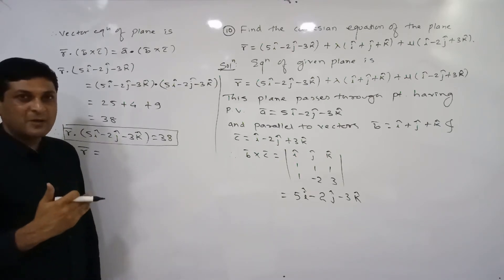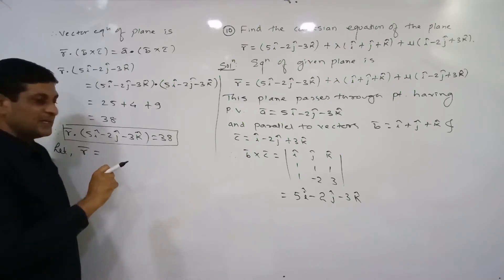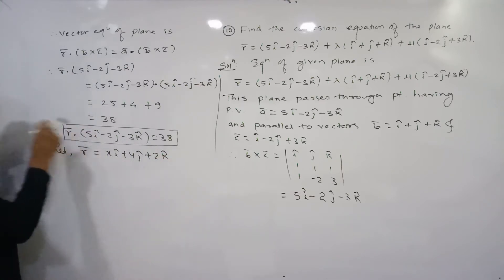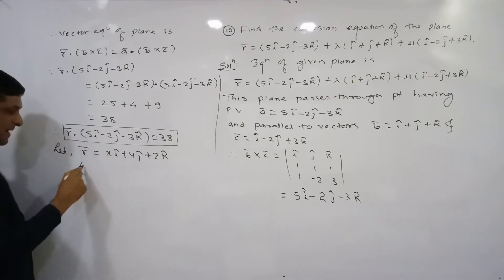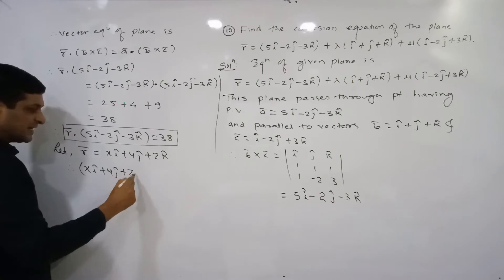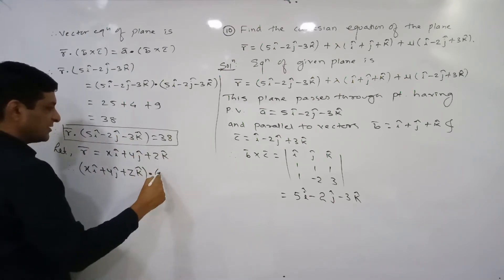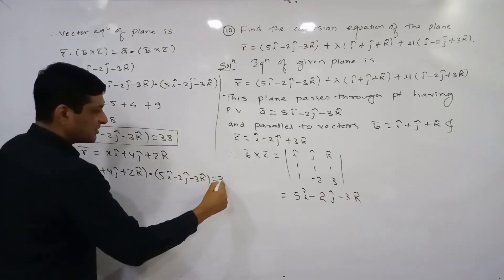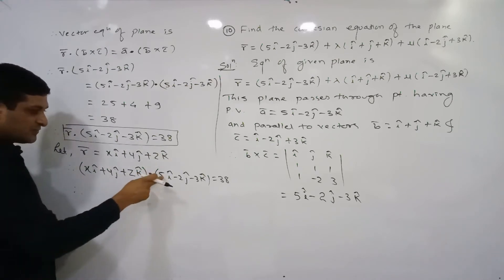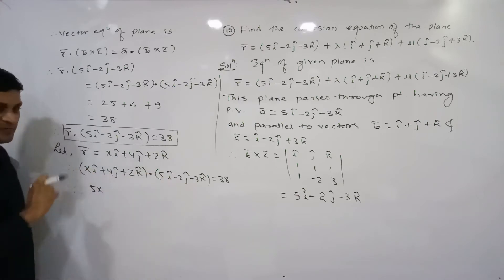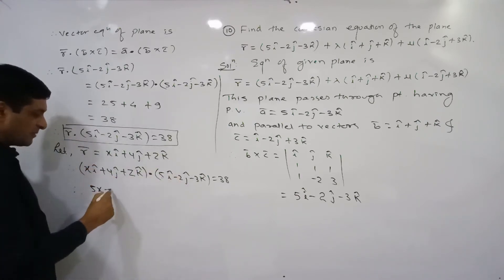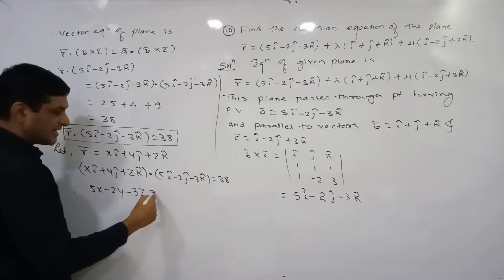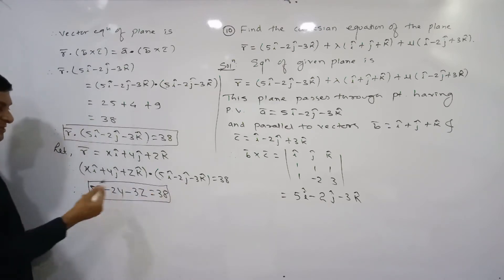To convert to Cartesian form, substitute r̄ = xî + yĵ + zk̂, since r̄ is the position vector of any point (x, y, z) on the plane. Substituting: (xî + yĵ + zk̂) · (5î - 2ĵ - 3k̂) = 38. Taking the dot product gives: 5x - 2y - 3z = 38. This is the required Cartesian equation of the plane.